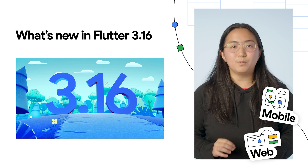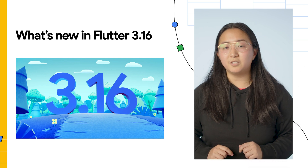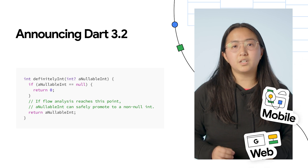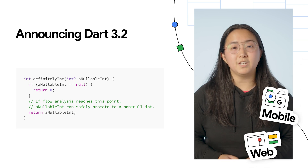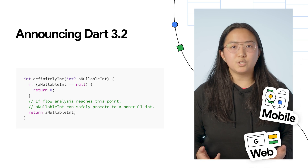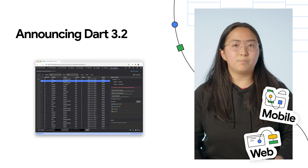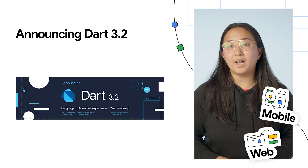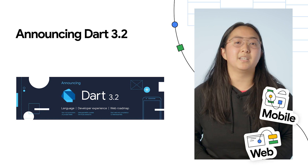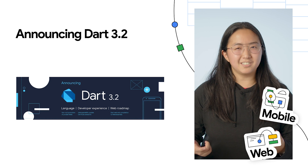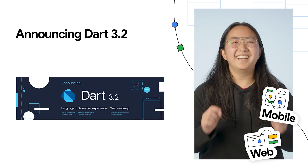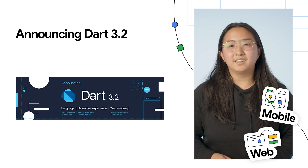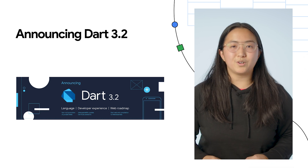Flutter 3.16 is available on the Stable channel today and includes Dart 3.2. Speaking of Dart 3.2, there's a new language feature for non-null promotion of private final fields, improved developer experience with new interop capabilities, support for extensions and dev tools, and an update on our web roadmap — including support for WASM, also known as WebAssembly. See what I did there? Seamless transition, am I right? Dart 3.2 is available now from dart.dev or as part of Flutter 3.16. Check out the Dart blog post for more details.